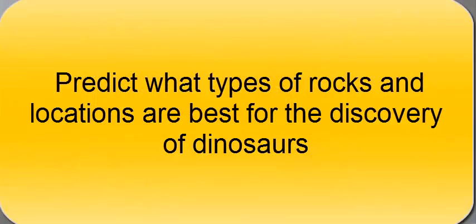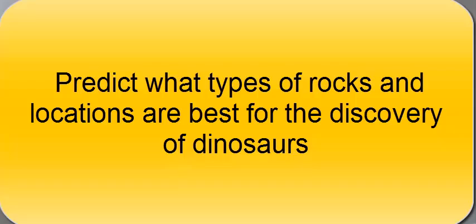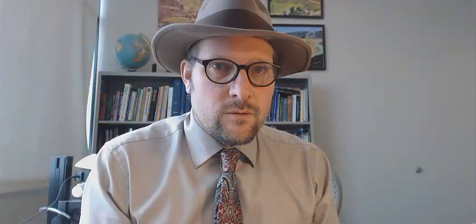Dinosaurs can be found in urban settings, in forested land, and in the desert. The desert is a good place to look because there is less covering the rocks. But amazing dinosaurs have been found all over the world, and there is likely a good place to look for dinosaurs near you. Now you should know how to predict what types of rocks and locations are best for the discovery of dinosaurs.